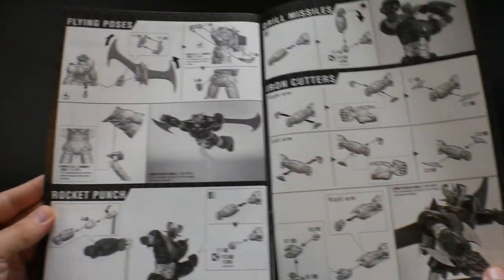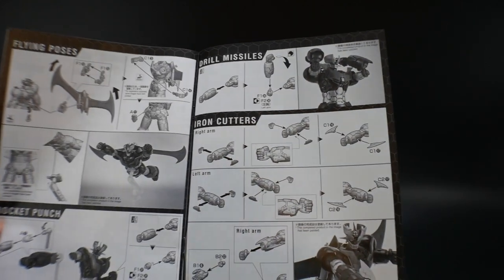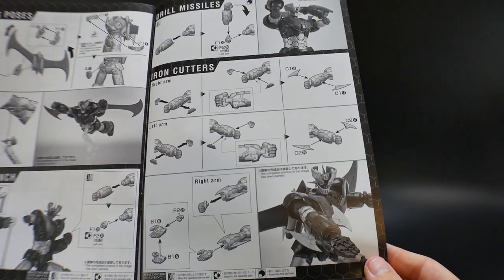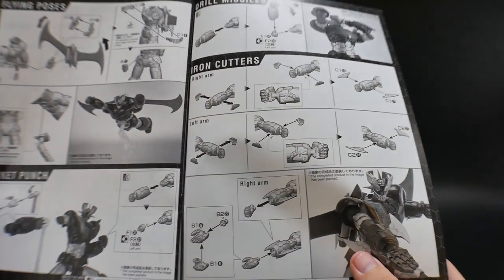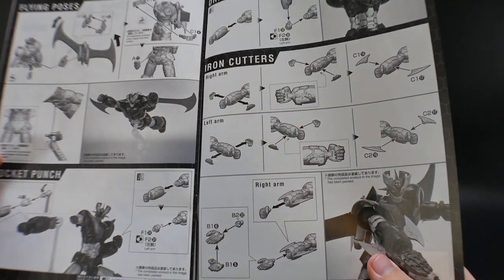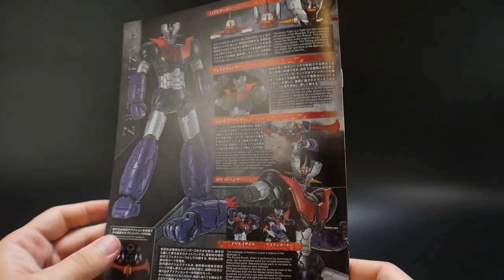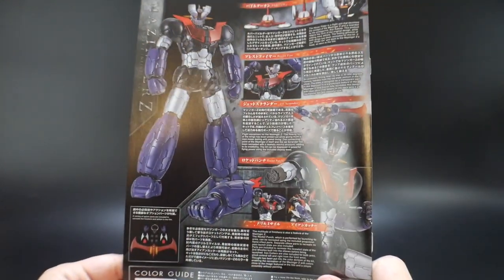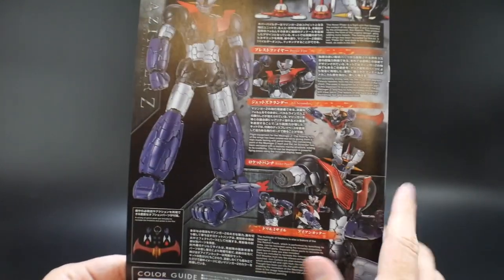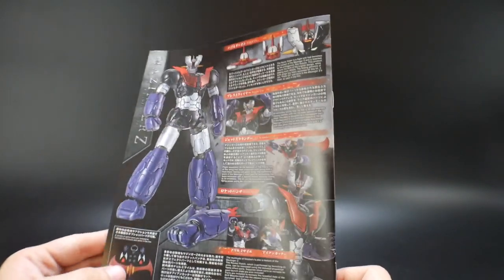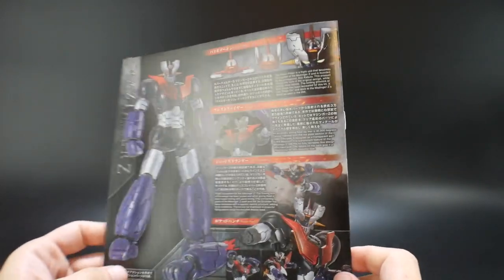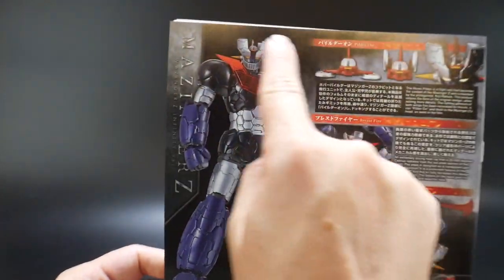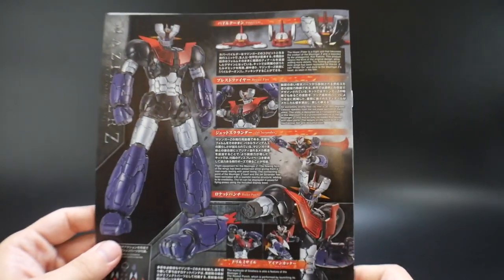But other than that, I mean, you're going to have the rocket punch. You got the flying poses right there, the drill missiles and the iron cutters right there. So a few gimmicks overall. You got some open hands. You got the close fists. And I think that's really about it. I don't think it has any kind of open hands to where you can grab things. But I mean, really, he doesn't have any kind of weapons that, you know, like the sword and all that. So this is pretty cool. Very awesome looking kit. I'm probably going to be more inclined to leave it without the wings. The wings are cool, don't get me wrong, but I just like the way it looks like this. This is super cool. So I'm very much looking forward to that.